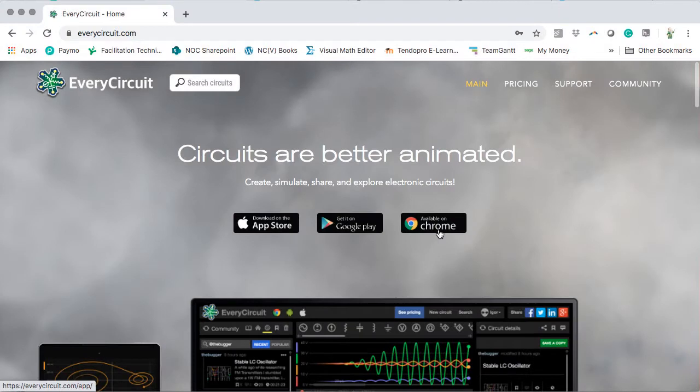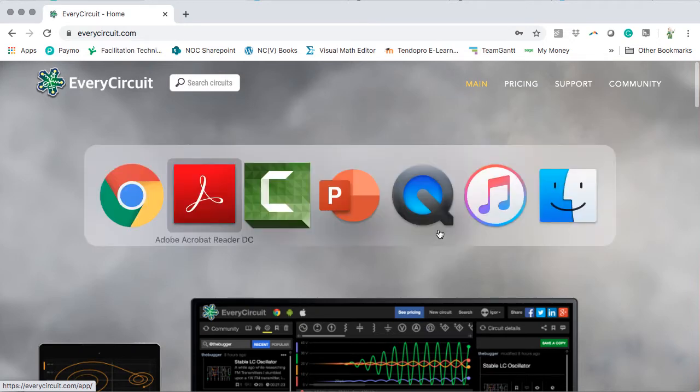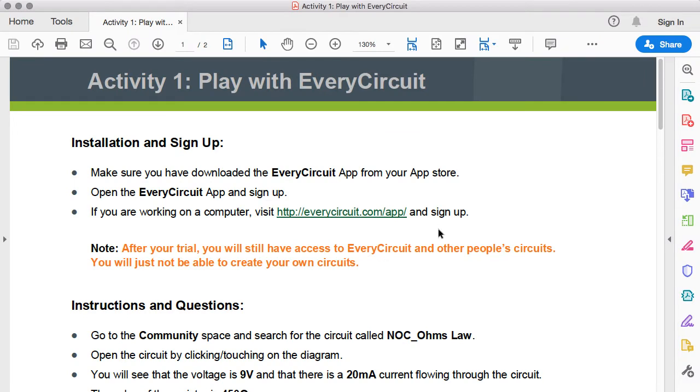You can pay for a premium version of the EveryCircuit app but you needn't. Once your trial period has expired all that changes is that you will no longer be able to create your own circuits. You will still be able to interact with circuits created by other people. You'll be guided through various interactions with circuits through a series of activity sheets that we've prepared for you.